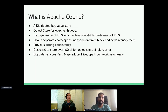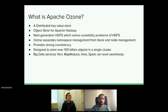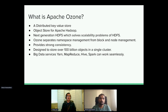Let's take a look at what is Apache Ozone and why do we need it. Ozone is a distributed key-value store aiming to solve some of the scalability issues facing HDFS. HDFS has been working very well up to scales such as hundreds of millions of files, but it's mostly targeted for large big data, not for small files with large quantities. And that is the best case for the object store.